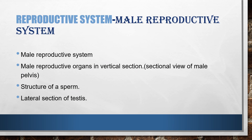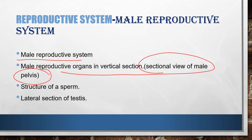Next comes the reproductive system, divided into two parts: male and female. For the male reproductive system, we will draw the male reproductive system and then the sectional view of the male pelvis showing the male reproductive system. Then comes the structure of the sperm and the lateral section of the testes. So: sectional view of male pelvis, structure of the sperm, and lateral section of the testes.